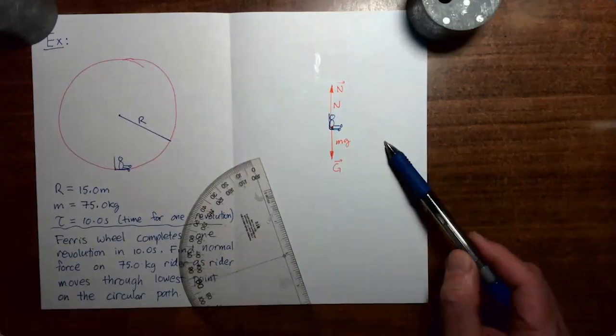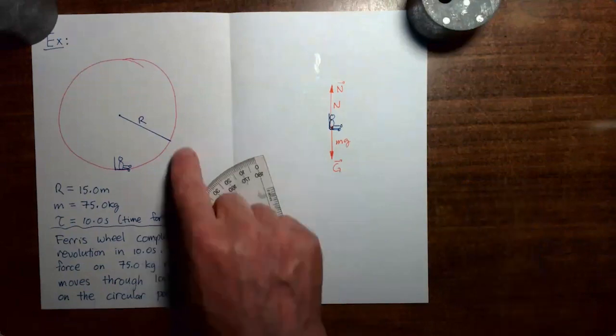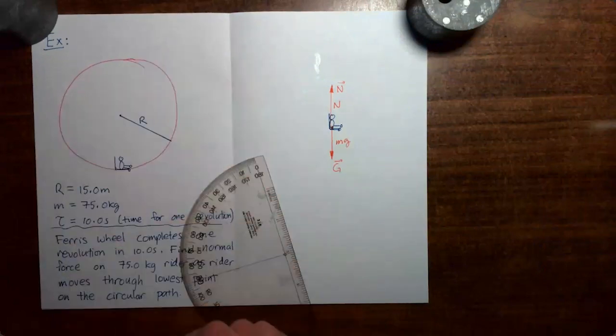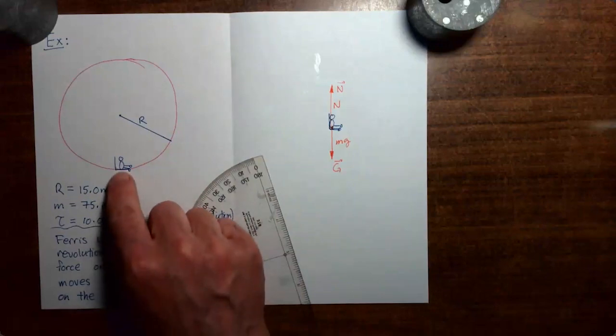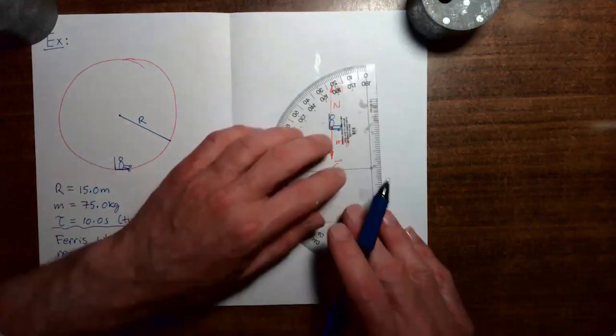So that's all of the forces, but we want to put in the acceleration vector as well. And as we've seen in the earlier videos, when you have an object moving in a circle at constant speed, the acceleration vector points in towards the center of the circle. So at the moment the rider is at the bottom of the circle, the acceleration vector points up for the center.